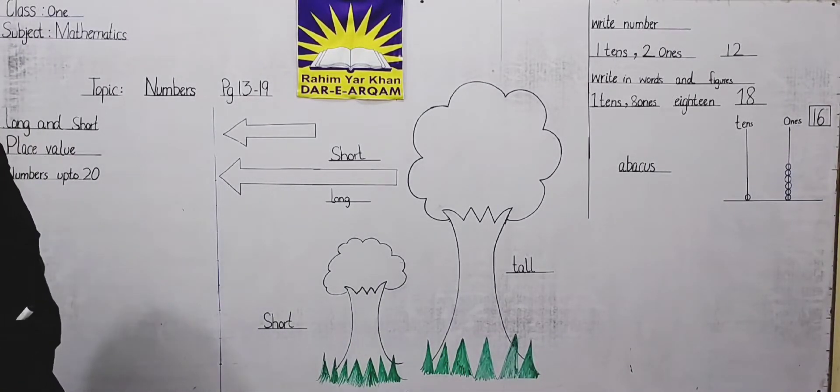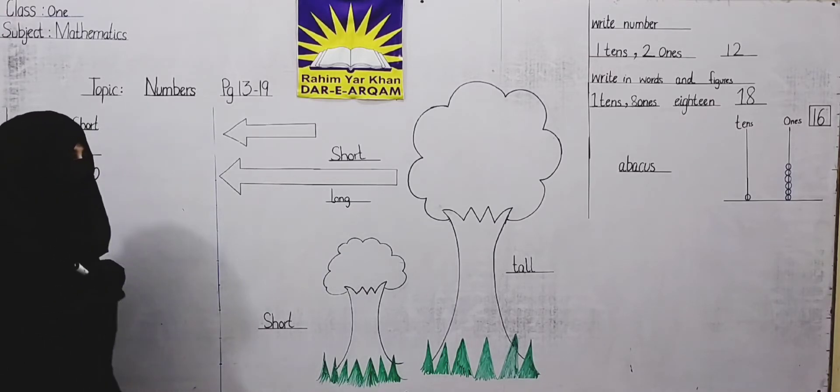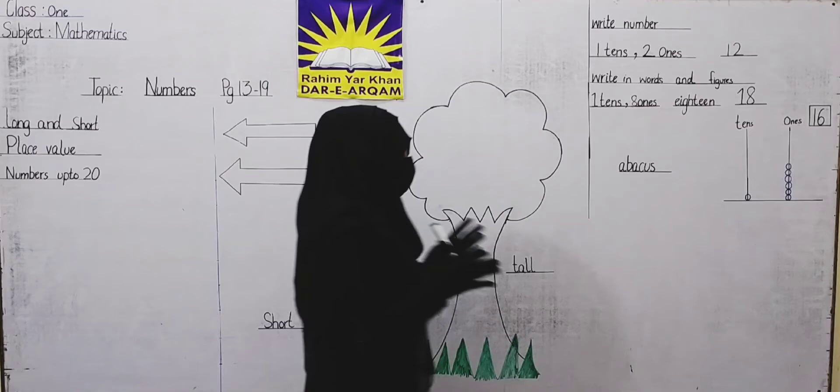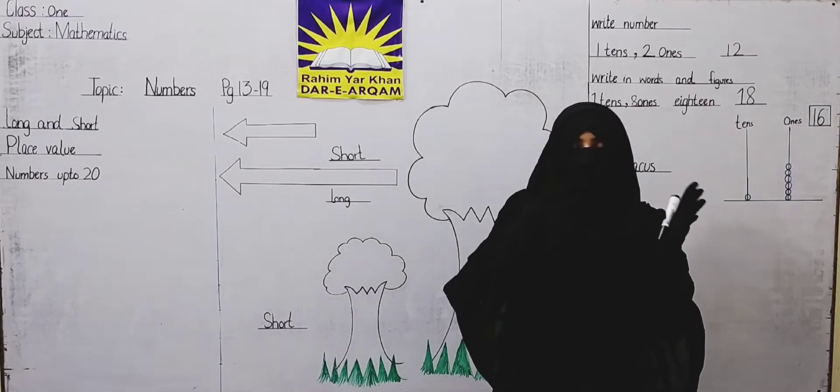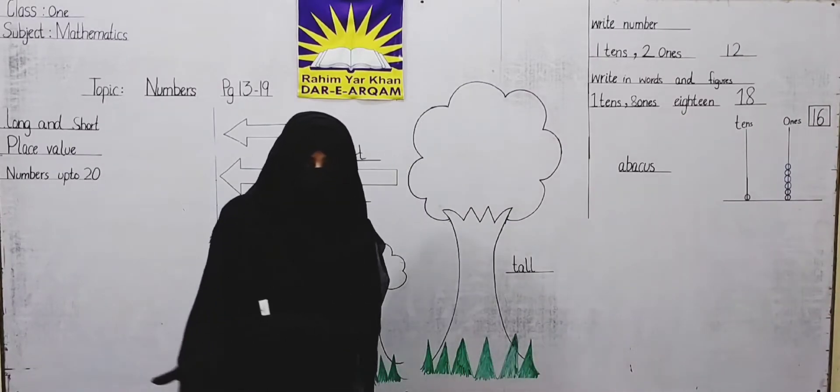20 is going to be a base value. First we will learn long and short. How do we learn long and tall?